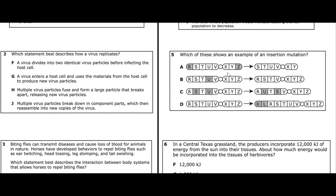In C, we have R-S-T-U-V and X-Y-Z before and after — counting the bases: eight before and eight after, so nothing was added or removed; this is not an insertion. In D, we have R-S-T-U-V and X-Y-Z, then after mutation K-L-R-S-T-U-V and X-Y-Z. K and L were added to the sequence, so the answer is D — that is an insertion mutation.